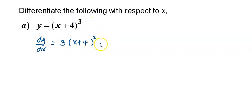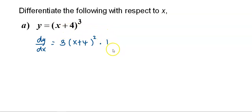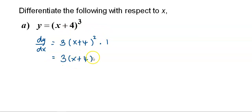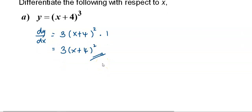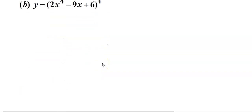Now differentiate the inside function, which is x+4, with respect to x — you get 1. After simplifying, you get 3 multiplied by (x+4) to the power of 2. This is your answer.